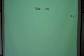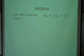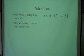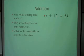Let's try one more addition. What is being done to the A? We're adding 15. Since we're adding 15, we need to do the opposite, which is subtract 15. And what we do to one side, we must do to the other.